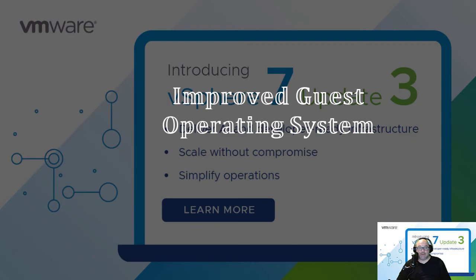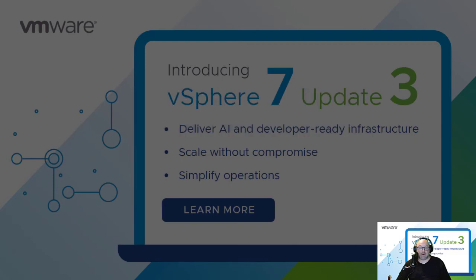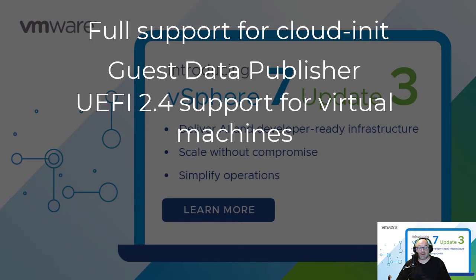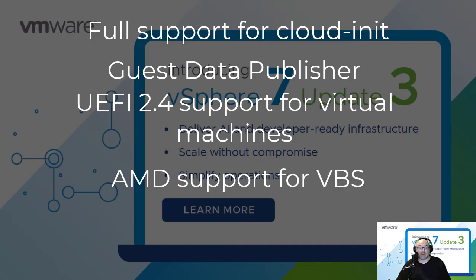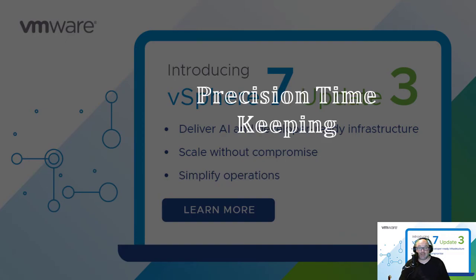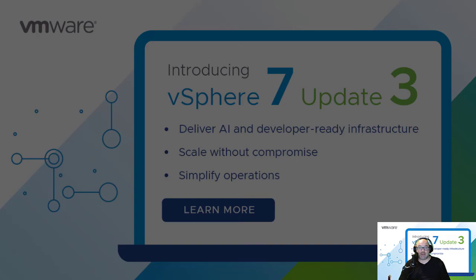Talking about improvements, we cannot forget about improved guest operating system support. In vSphere 7 Update 3 we can see the following updates: full support for cloud-init guest data publisher, UEFI 2.4 support for virtual machines, AMD support for VBS updates. We also have updates to Precision Time Keeping — PTP now supports the ability to add additional NTP servers as a fallback should the PTP server no longer be operable.